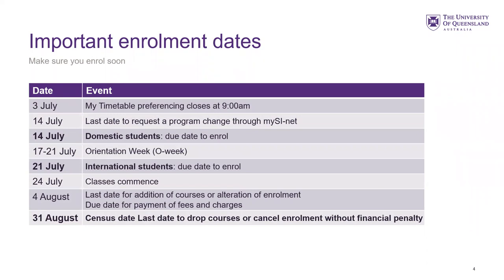Orientation week, or O week as we like to call it, is the 17th to the 21st of July. The 21st of July is also the international student's due date to enrol. The 24th of July is when classes will commence. The 4th of August is the last date for additional courses or alteration of enrolment, and it's the due date for payment of fees and charges. The 31st of August is the census date — this is the last date to drop courses or cancel your enrolment without financial penalty.